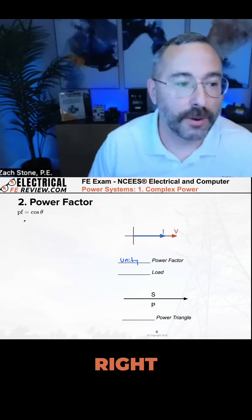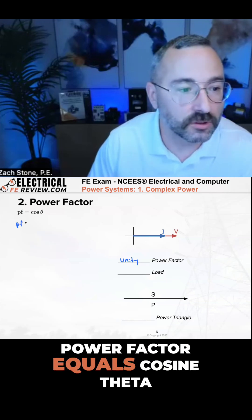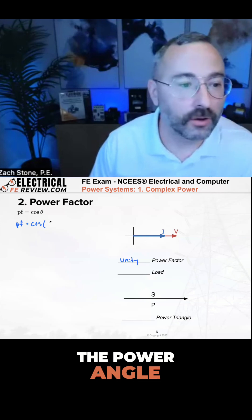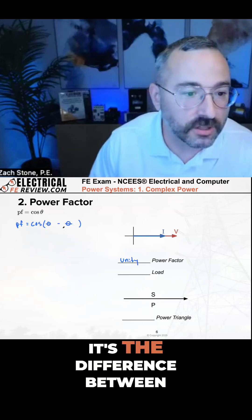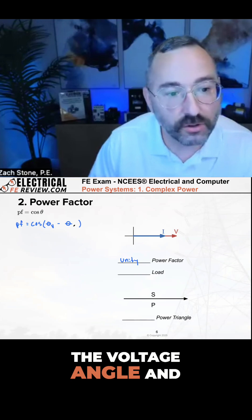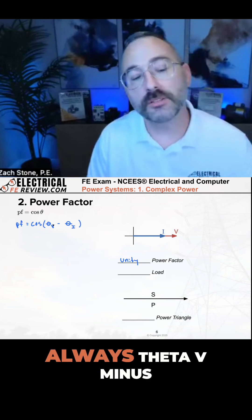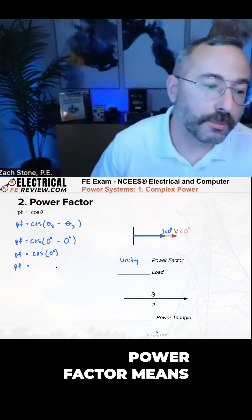Formula for power factor. Power factor equals cosine theta. Theta, the power angle, is the difference between which two angles? It's the difference between the voltage angle and the current angle. Always theta v minus theta i. Unity power factor...